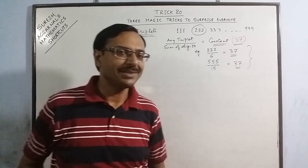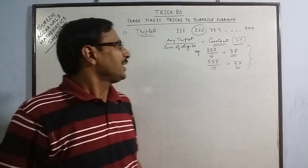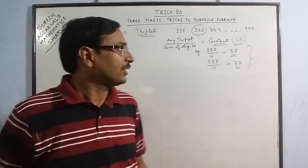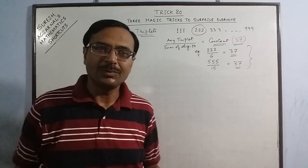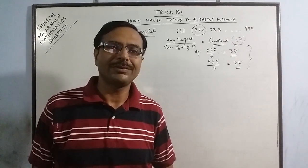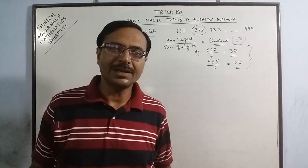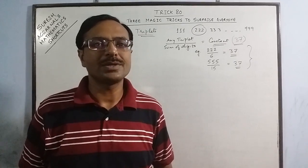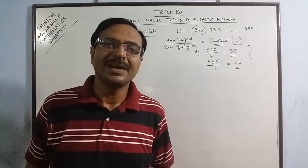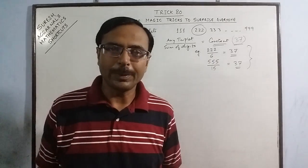Every time the answer is 37. This is one of the magic tricks, one of the mathemagic which you can perform in front of your students. Teachers can show this to their students during their adjustment periods.